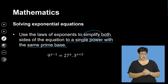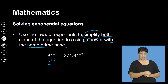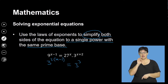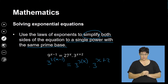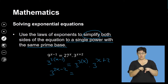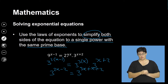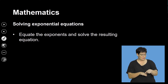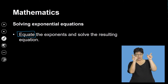For example: 9 to the exponent of x minus 1. To simplify this, I must change everything to base 3 — a prime number. So this becomes 3 squared to the exponent of x minus 1, which equals 3 cubed to the exponent of x, multiplied by 3 to the exponent of x plus 2. This gives me 3 to the exponent of 2x minus 2, equals 3 to the exponent of 3x — because the bases are the same, I just add the exponents — plus x plus 2.